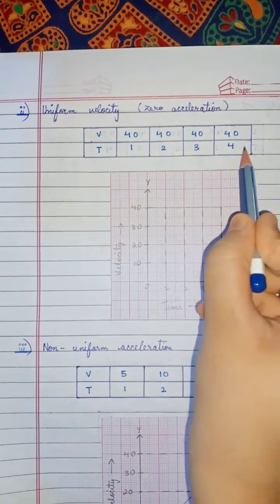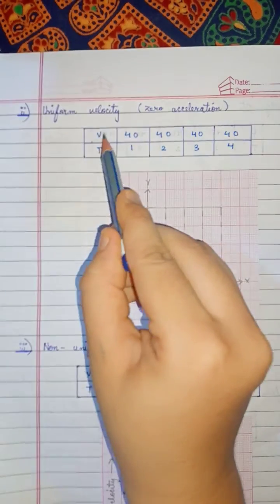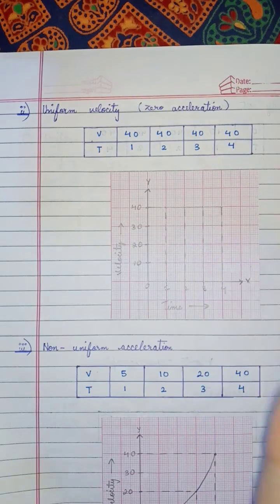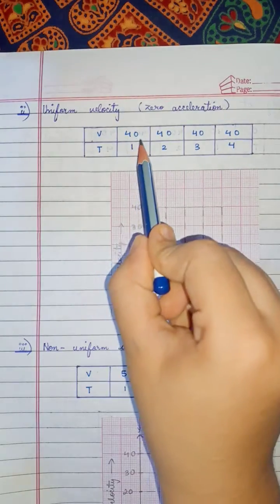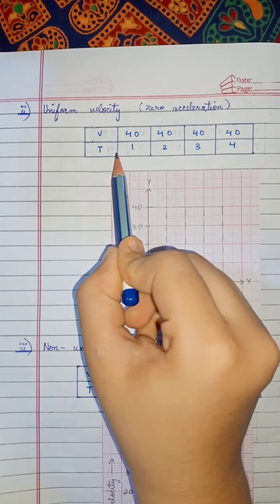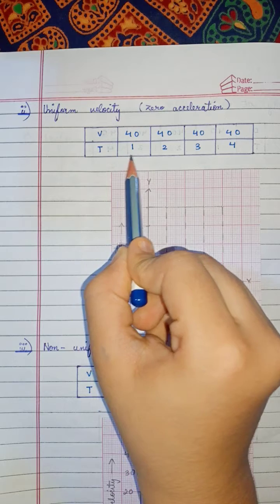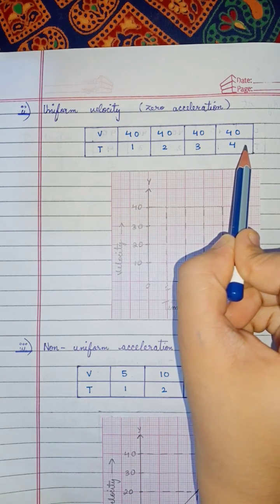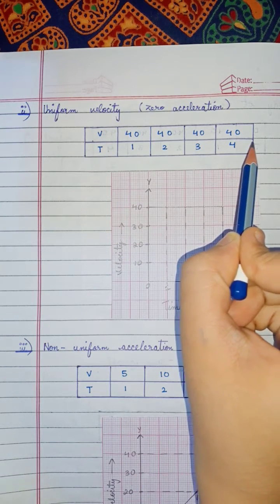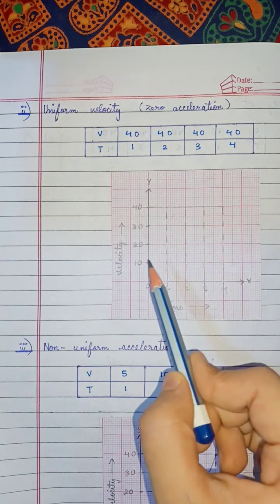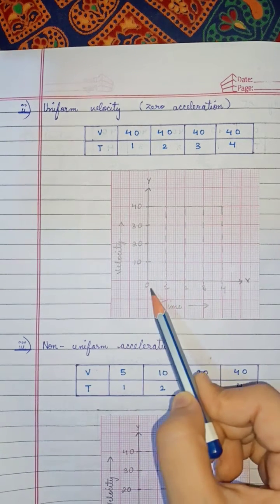Now look at this table: time — one second, two second, three second, four second — and velocity — 40 m/s, 40 m/s, 40 m/s, 40 m/s. Can you see any change in velocity with respect to time? No. That means it is uniform velocity.